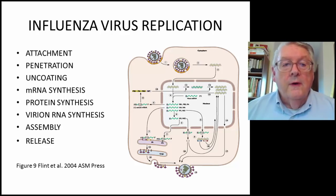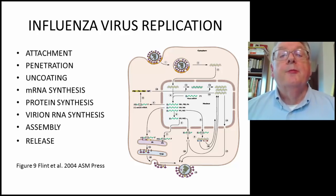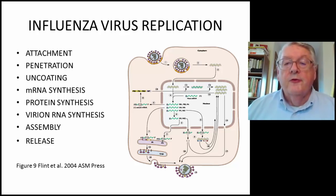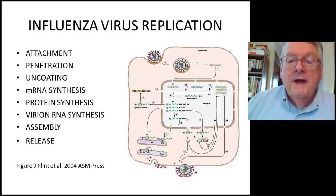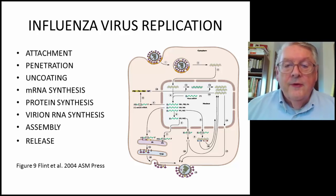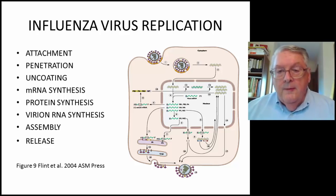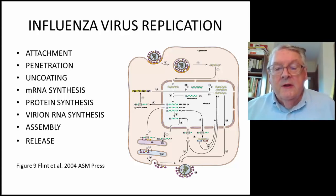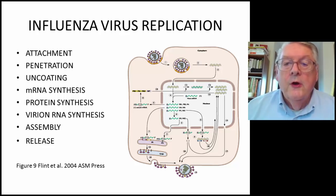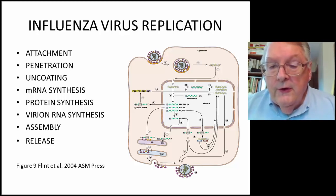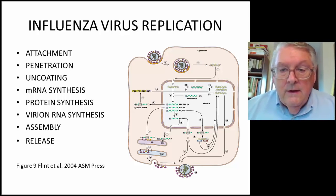This is the replication cycle for influenza viruses. The first step is attachment: the virus attaches to sialic acid-containing glycoproteins and glycolipids on the plasma membrane of a susceptible cell. Next, the virus is taken into the cytoplasm through clathrin-coated pits. The pH inside the endosome is reduced to about 6, under which circumstances the hemagglutinin undergoes a conformational change, allowing the viral envelope to fuse with the endosomal membrane, releasing the ribonucleoproteins into the cytoplasm.